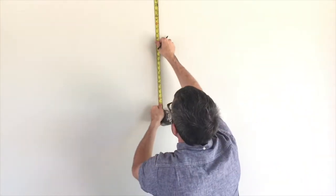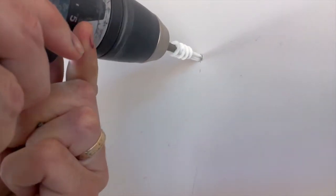Okay, after measuring for the right spot, just drill the white plastic anchor into the wall. No pre-drilling required.